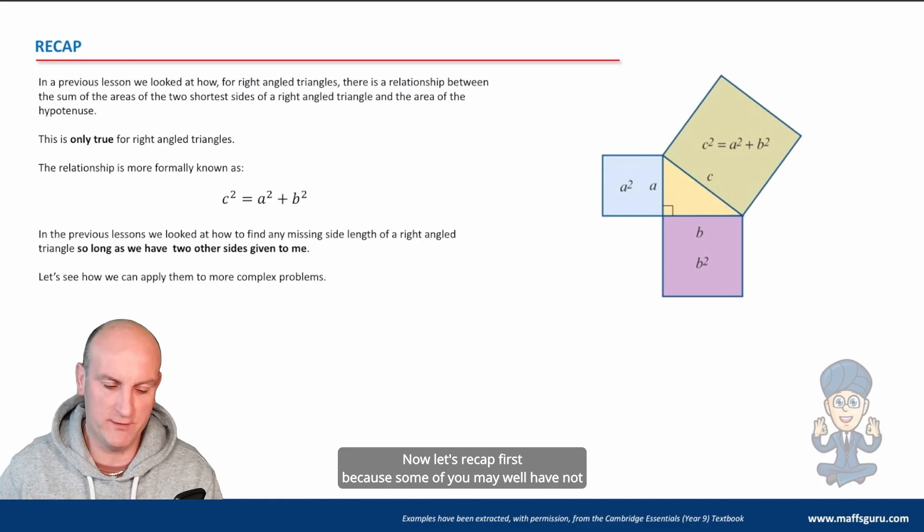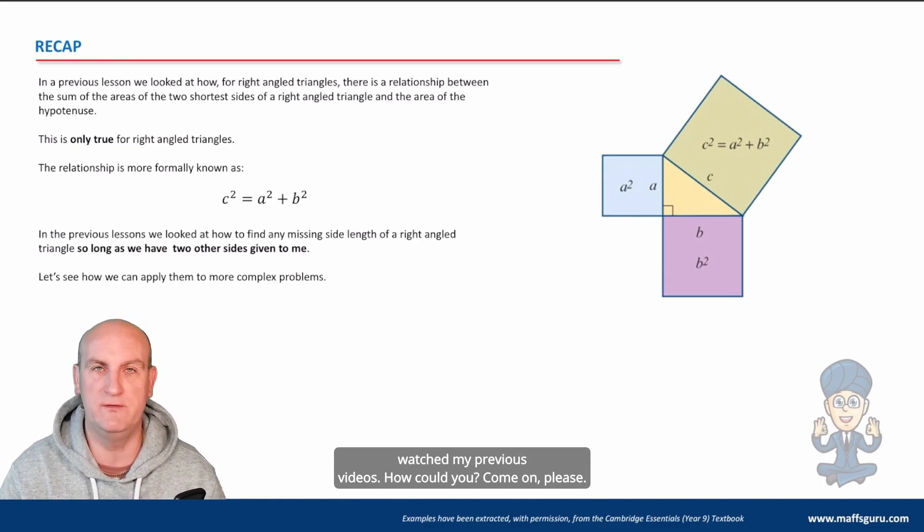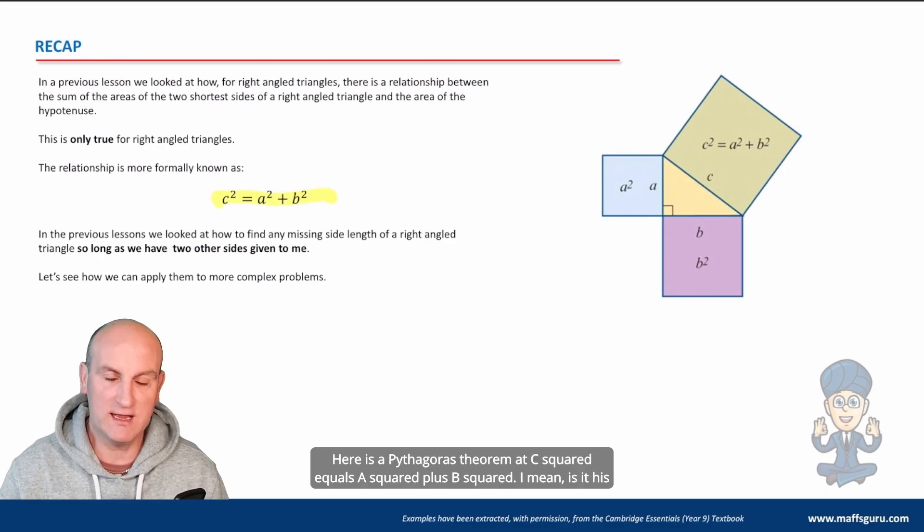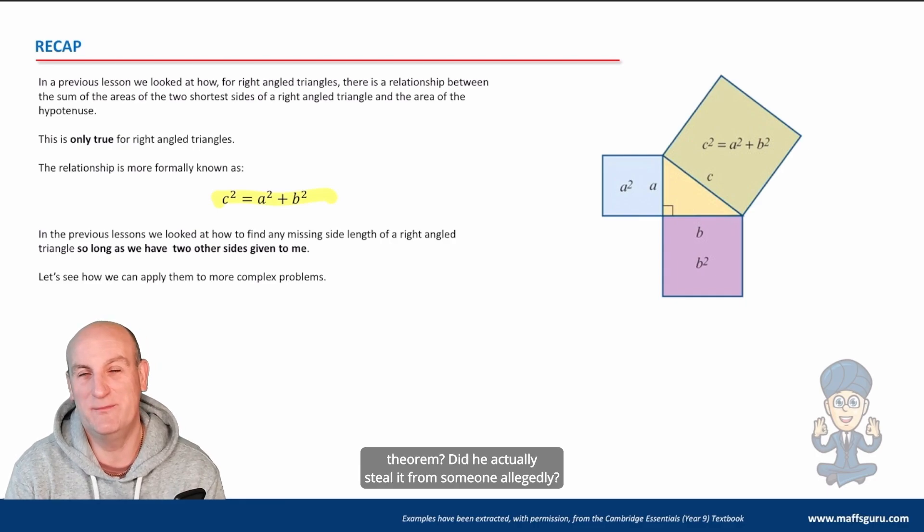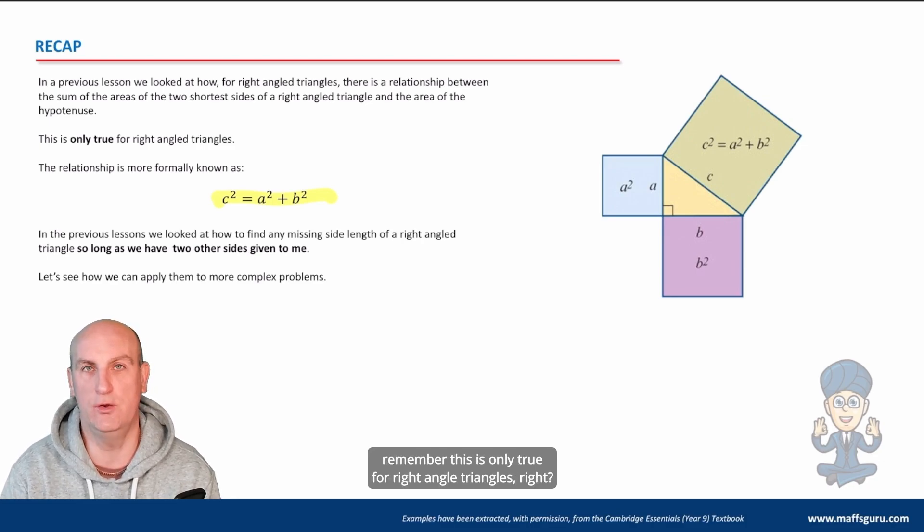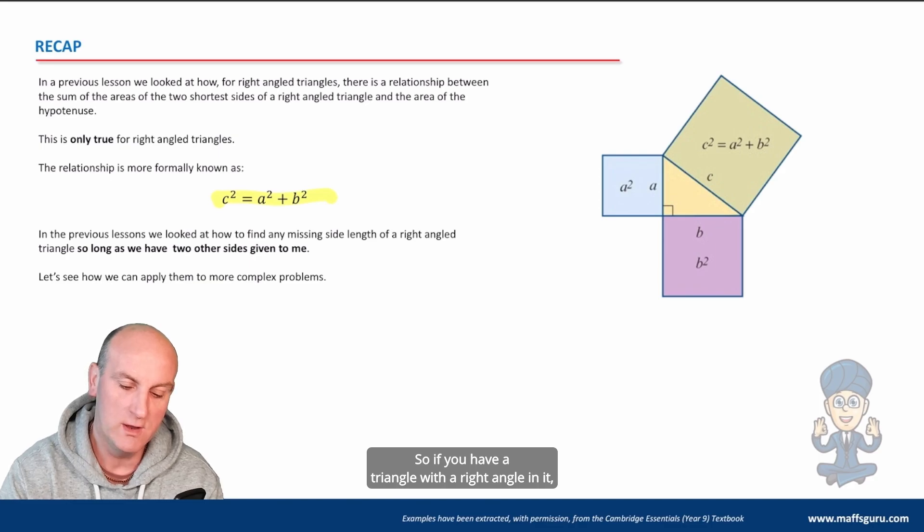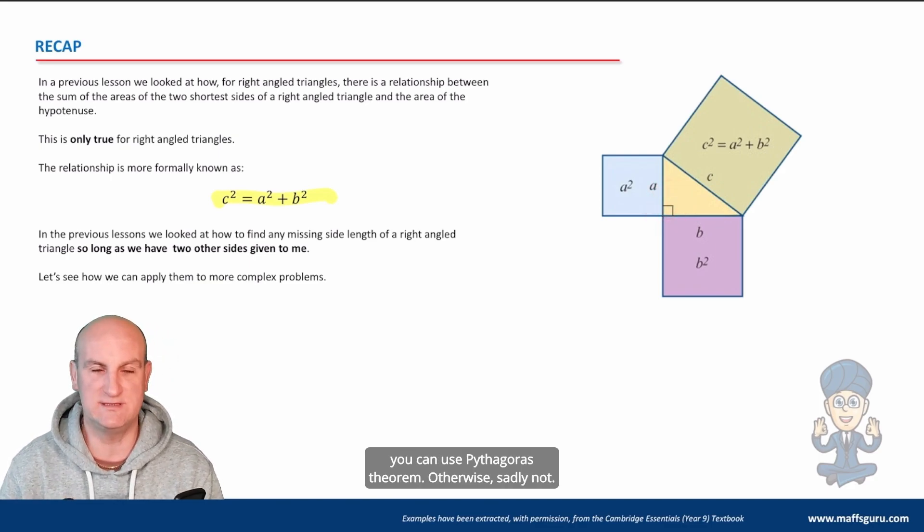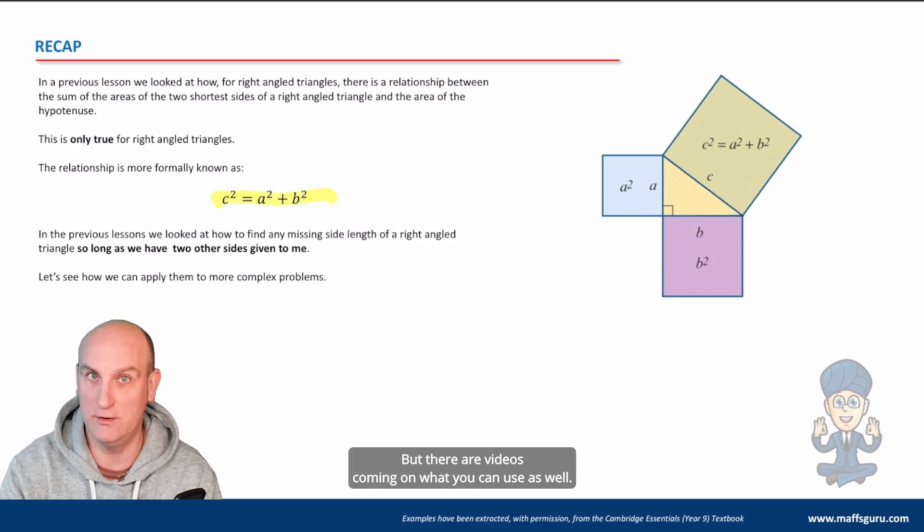Now let's recap first because some of you may well have not watched my previous videos. Here is Pythagoras's theorem: C squared equals A squared plus B squared. Did he actually steal it from someone? Allegedly. But just remember, this is only true for right angle triangles. If you have a triangle with a right angle in it, you can use Pythagoras's theorem. Otherwise, sadly not.